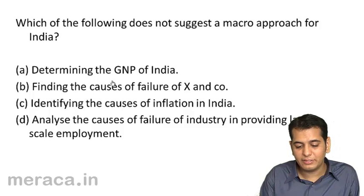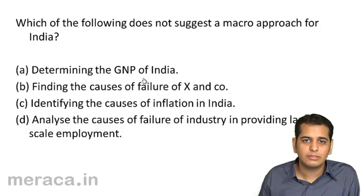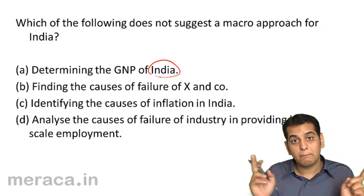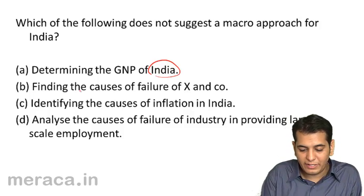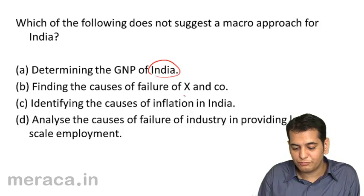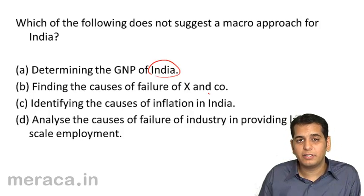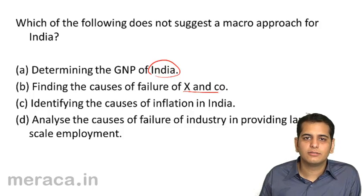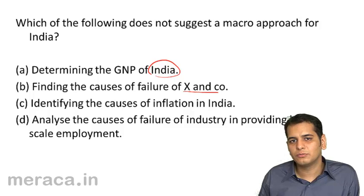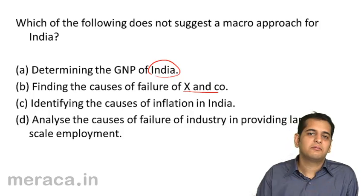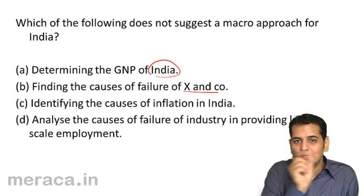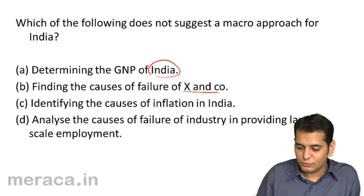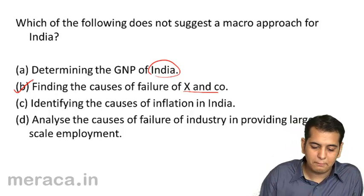A: determining the GNP of India — GNP of India is macro. B: finding the causes of failure of X company. Is this macro or micro? Yes, this is micro. This relates to only one unit, a single firm. So this is our answer: micro.